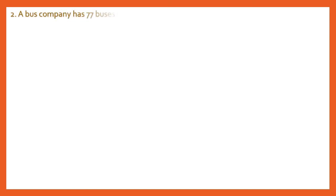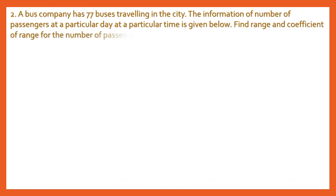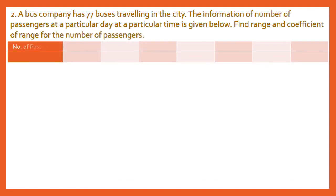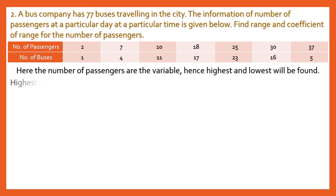Question 2: A bus company has 77 buses. The information on number of passengers at a particular day and time is given in a table — number of passengers and number of buses. Since we are calculating range, we don't need the frequencies. We only need the highest and lowest number of passengers. The highest number of passengers is 37 and the lowest is 2.